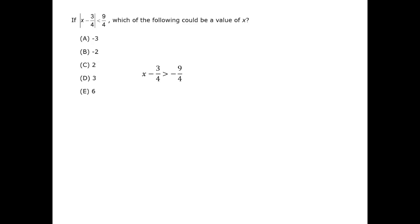We can further clarify this case by adding 3 quarters to both sides of the inequality, and then dividing both the top and the bottom of the fraction. Meanwhile, answer choices A and B are negative, but they are both less than minus 3 halves, since they are to the left of minus 1.5 on the number line.